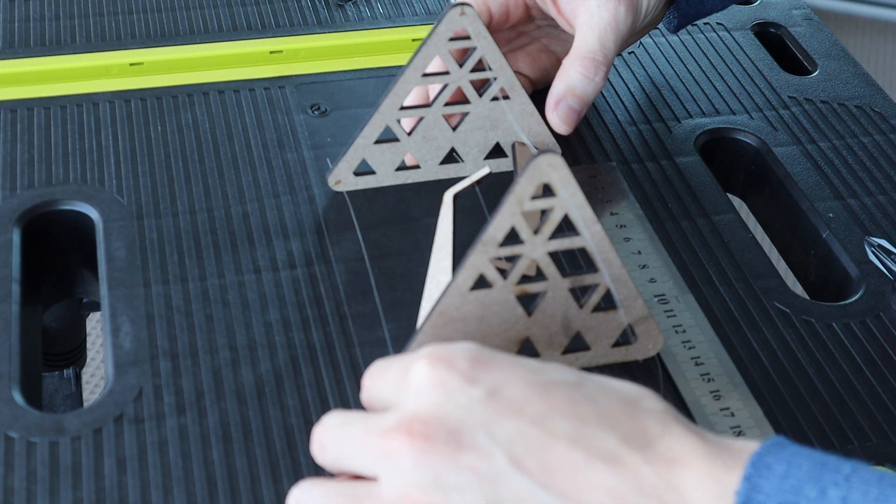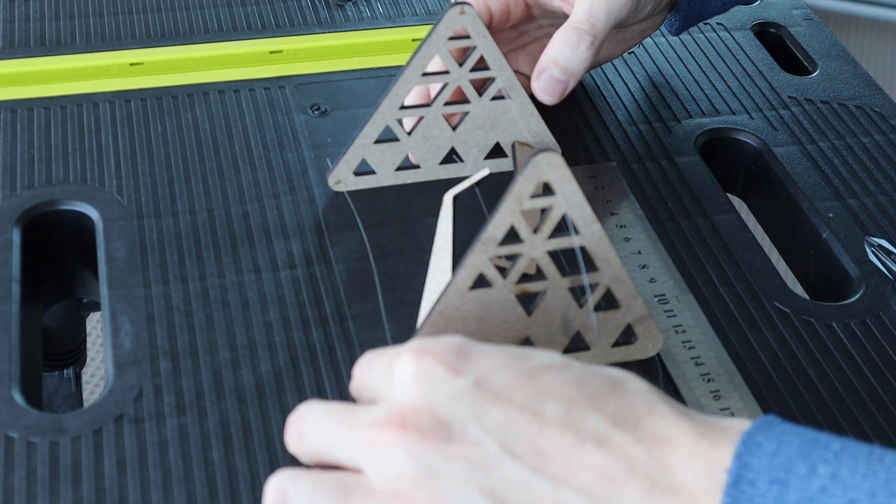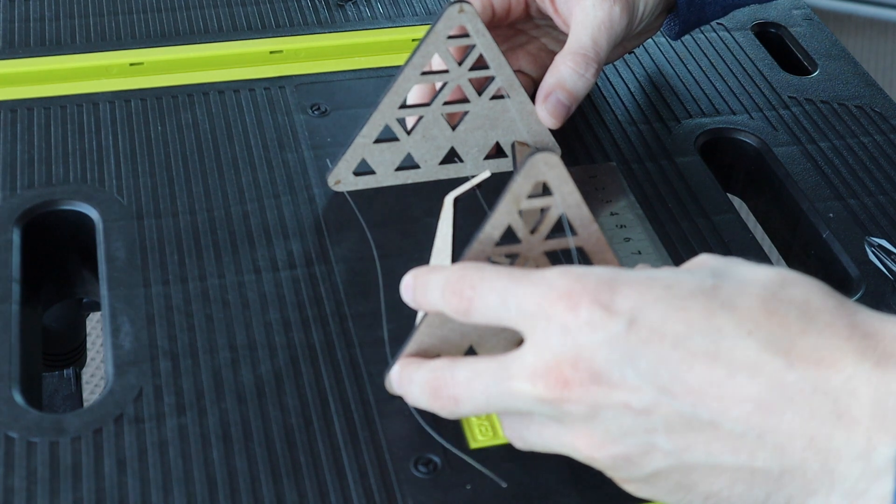It helps to use a ruler to get this part right. Also, use a small amount of glue until you're sure that they're correct so that you can undo a joint if you need to.